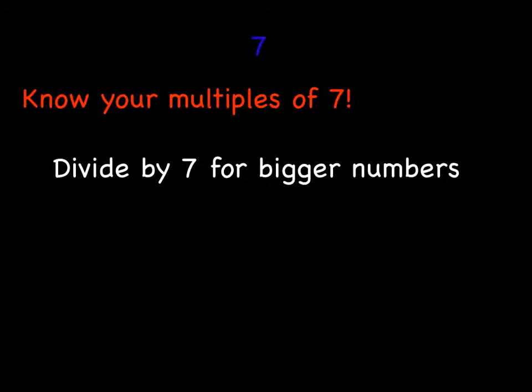For seven, there's no really easy tricks that I can tell you. All you're going to need to do is know your multiples of seven, and then beyond that, for bigger numbers, divide by seven. Whether you divide on paper, or if your teacher allows you to use a calculator, that's going to be your easiest way to figure out if your number has seven as a factor.